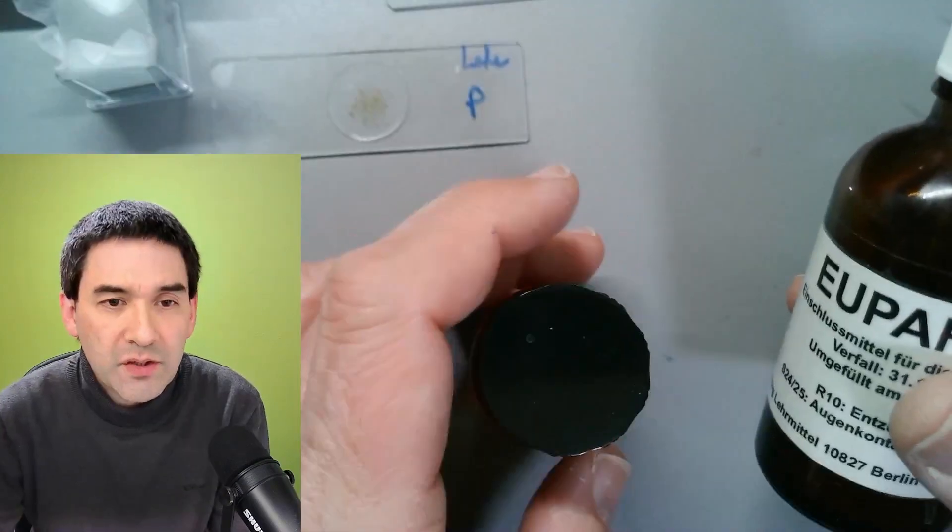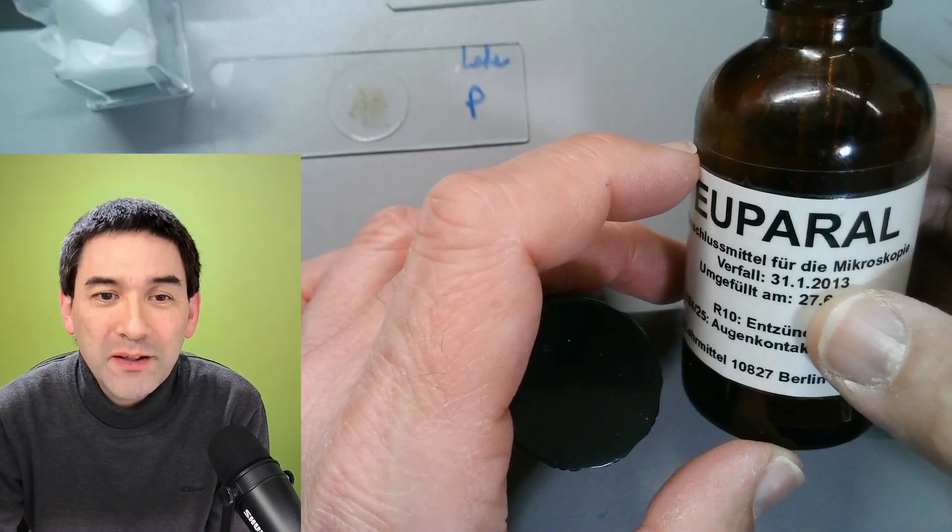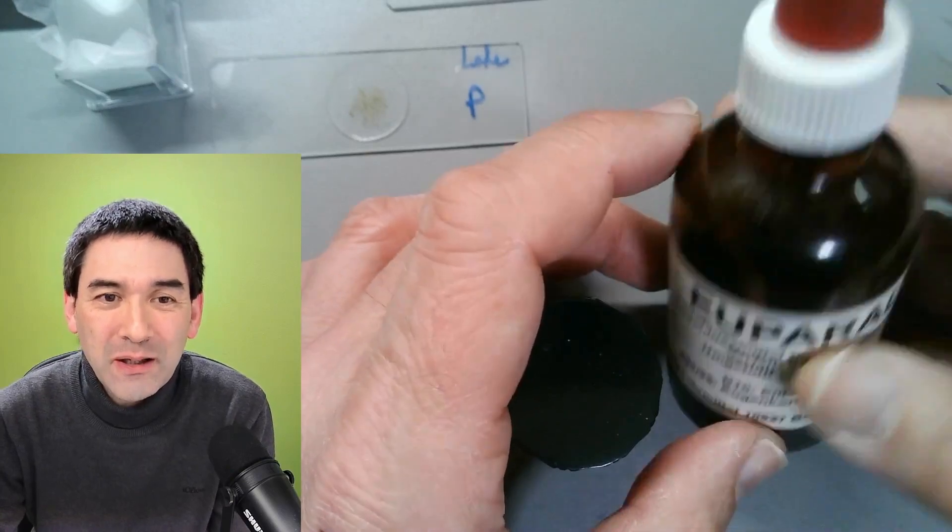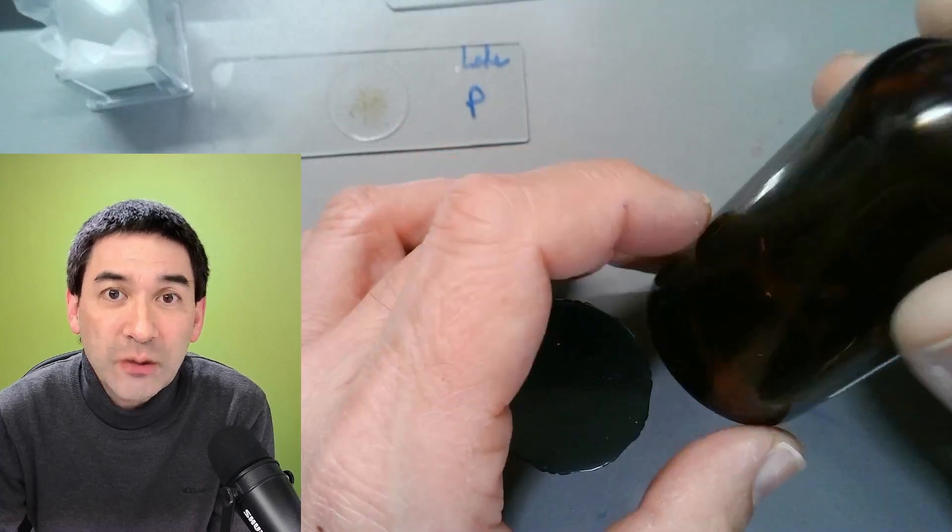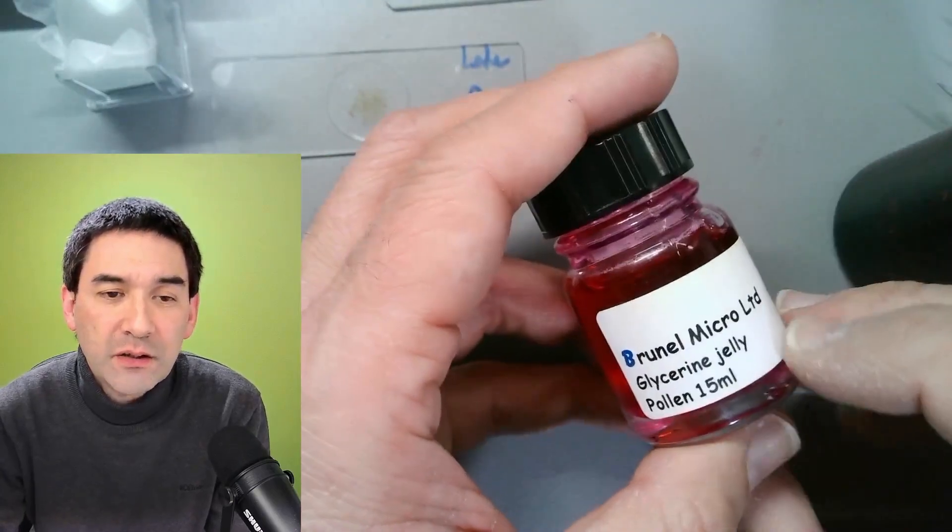Here, this is Eupro, right? It's already expired back in 2013, but it's still usable. You see that it's a little bit—I can dilute it with a little bit of alcohol. And this one over here, that is glycerin gelatin.